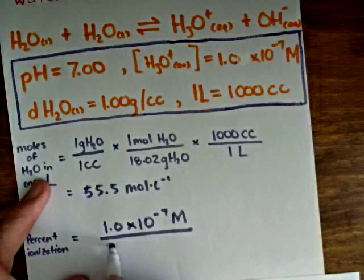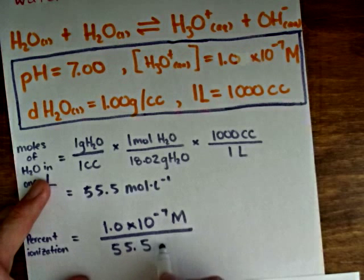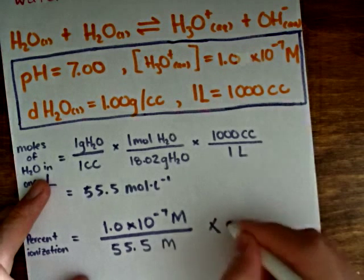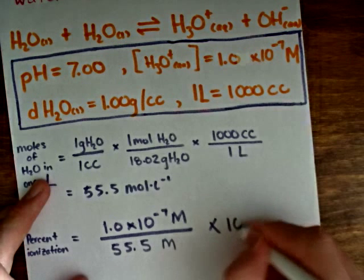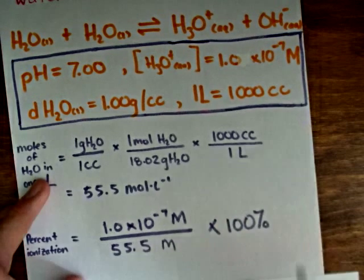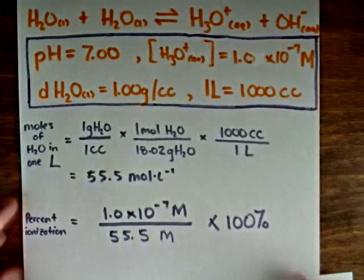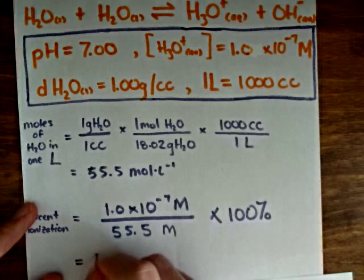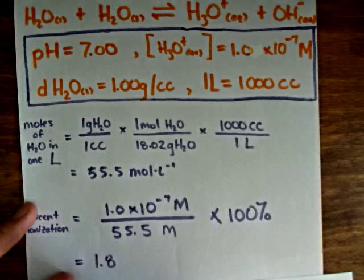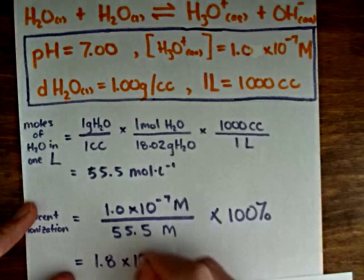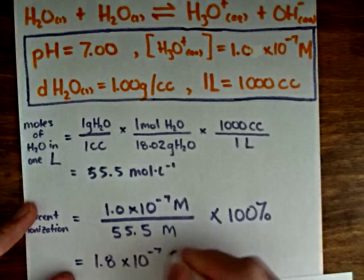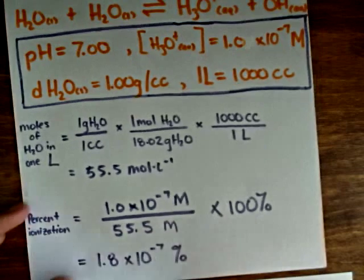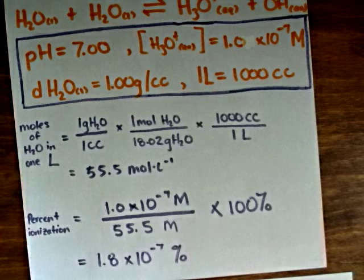divided by 55.5 moles per liter, which gives us a value of 1.8 times 10 to the negative 7 percent ionization of water.